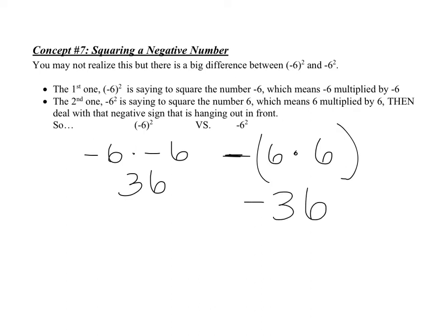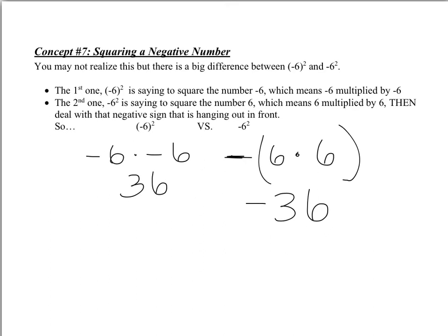So this is negative 36. Big difference. The thing to remember is that the exponent is attached to the exact thing it wants you to square. Since it's attached to the parentheses, it is telling you to square everything inside the parentheses. Here, the 2 is directly attached to that 6, and that minus sign is not part of the 6 because it doesn't have parentheses around it. So I like to say this is negative 6 squared, and this one is saying minus 6 squared.